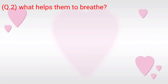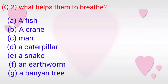Question 2: What helps them breathe? A. A fish — by gills. B. A crane — by lungs aided with air sacs. C. Man — by lungs. D. A caterpillar — by spiracles. E. A snake — by lungs. F. An earthworm — by skin.